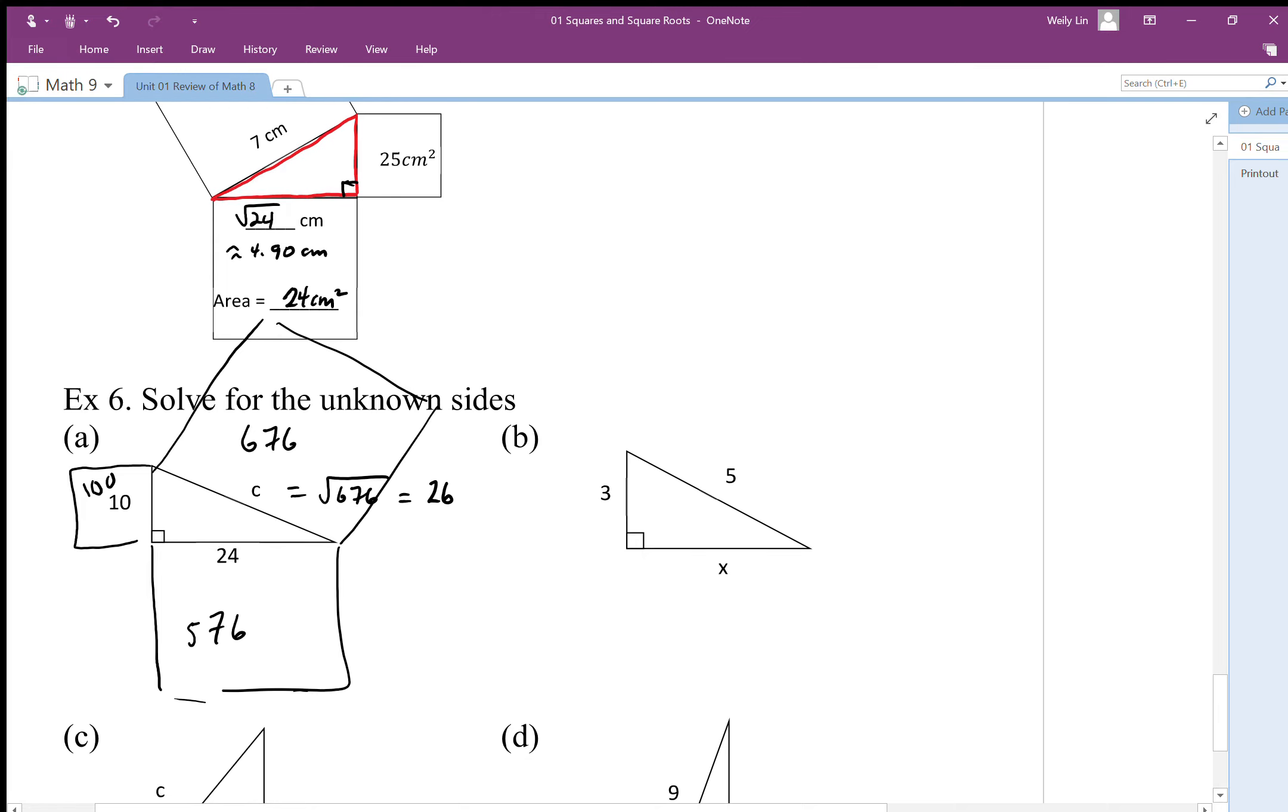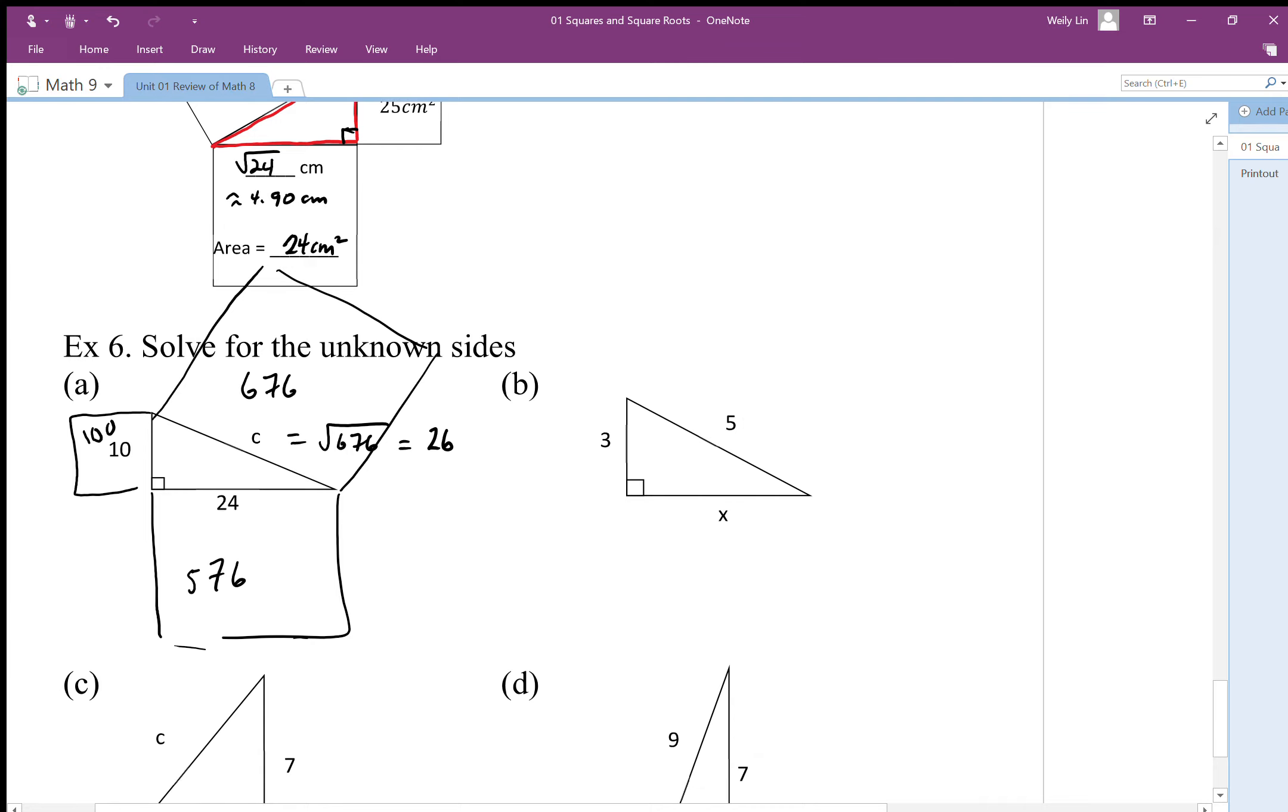I can do the same thing here. In this case, a squared plus b squared equals c squared. Here I'm going to do c squared minus a squared equals b squared.